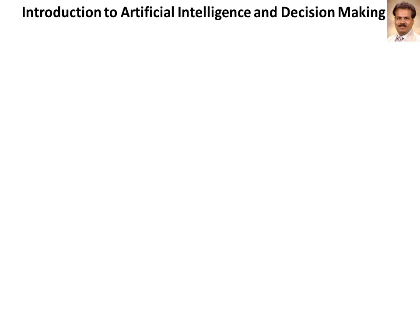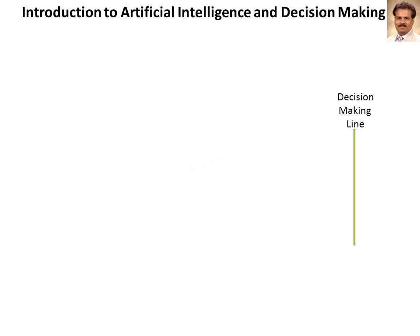One thing should be clear at this point is that artificial intelligence and decision making come together. Artificial intelligence is abbreviated as AI. Artificial intelligence or AI is an algorithm that facilitates decision making. In other words, decision making plays a vital role in AI.